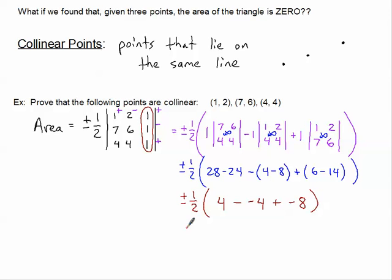So let's change color here. Plus or minus a half times, we've got four minus negative four. Well that just turns into four plus four which is eight. And there's my negative eight. And there we go. So this ultimately is plus or minus a half times zero, which is equal to zero.